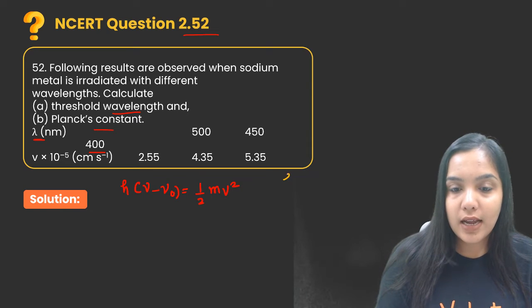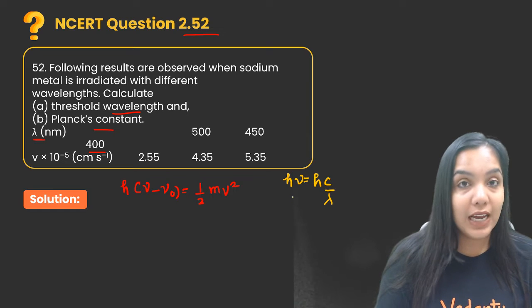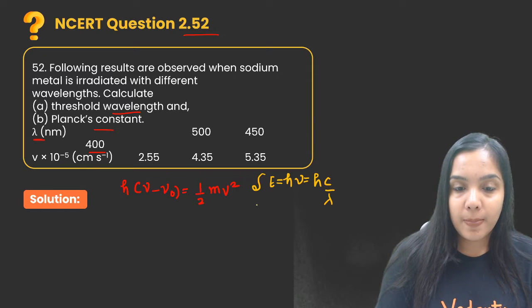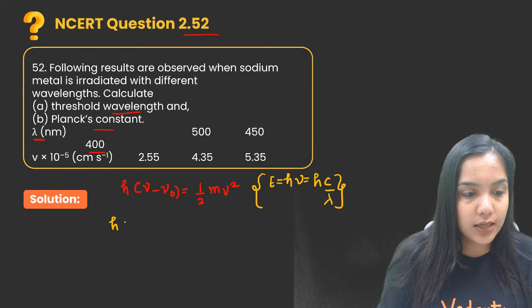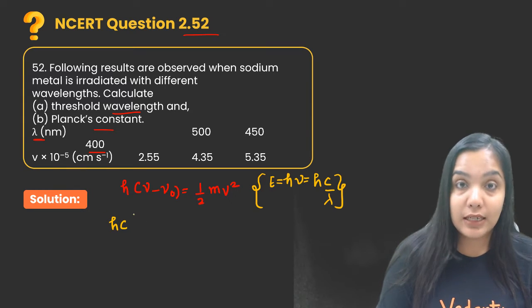Now we will put it here. c is common in both cases because that is a constant speed of light. So it becomes one upon lambda minus one upon lambda naught.